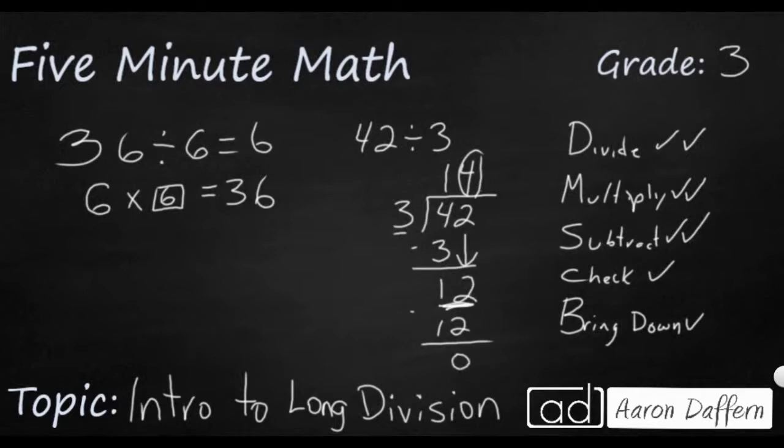0 is definitely smaller than 3. There are no more numbers to bring down, so we can circle it, because we are done. So 3 goes into 42 14 times. Just to make sure, let's go ahead and use what we know of 2 by 1 multiplication. Let's check our work.